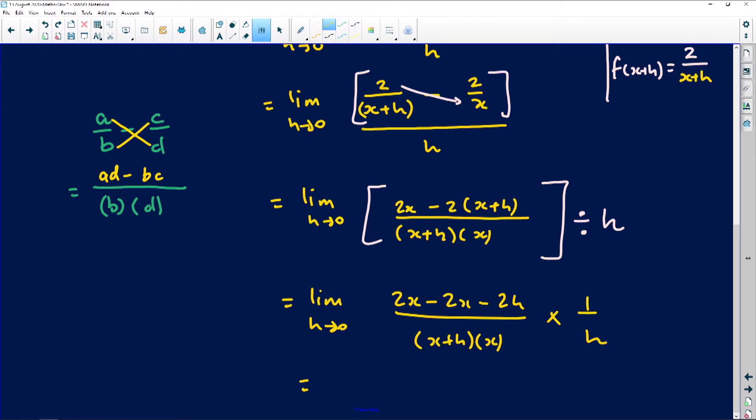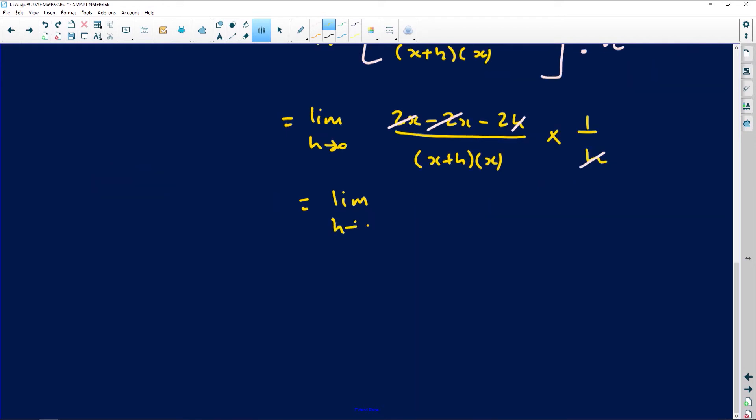Then from here, you will notice that 2x will subtract 2x out, and then we are left with negative 2h on the numerator. That h will then cancel the h that we have in the far right, and then we'll just simply end up with the limit as h approaches 0 of negative 2 remains on the numerator. And on the denominator, we've got x plus h multiplied by x.